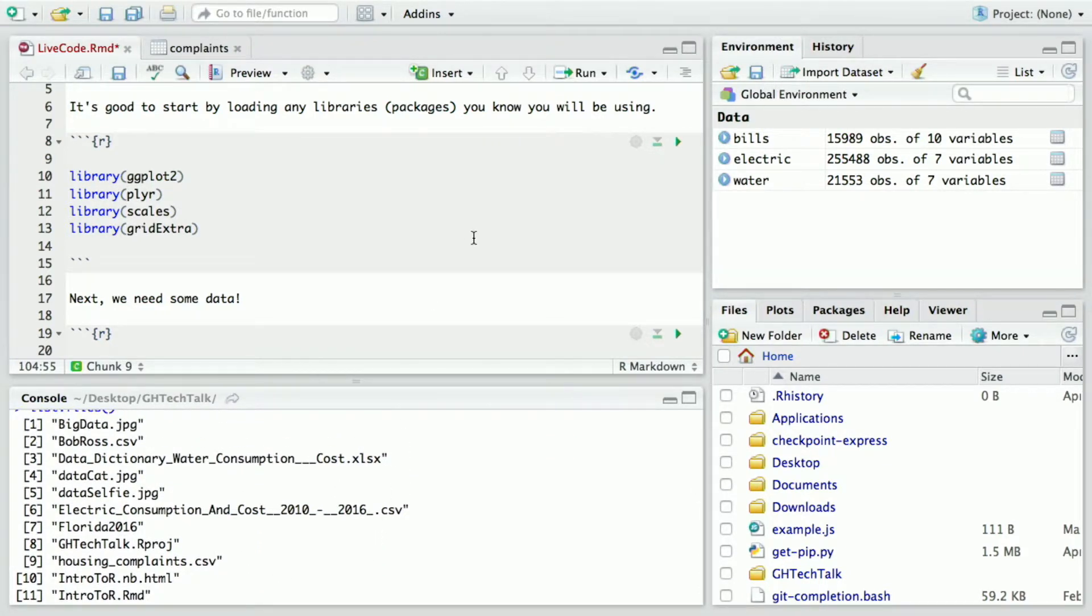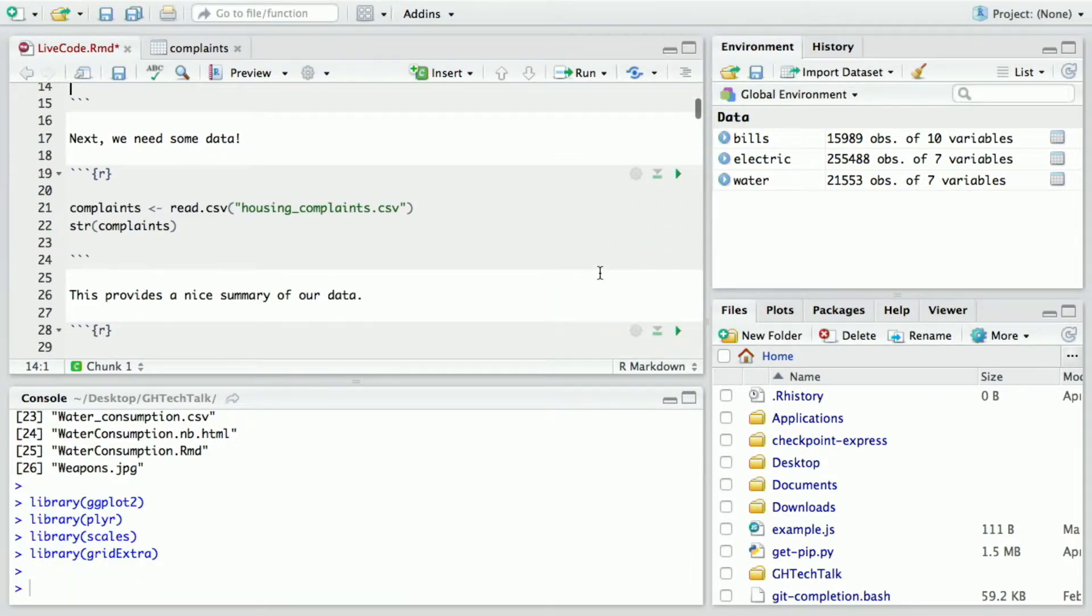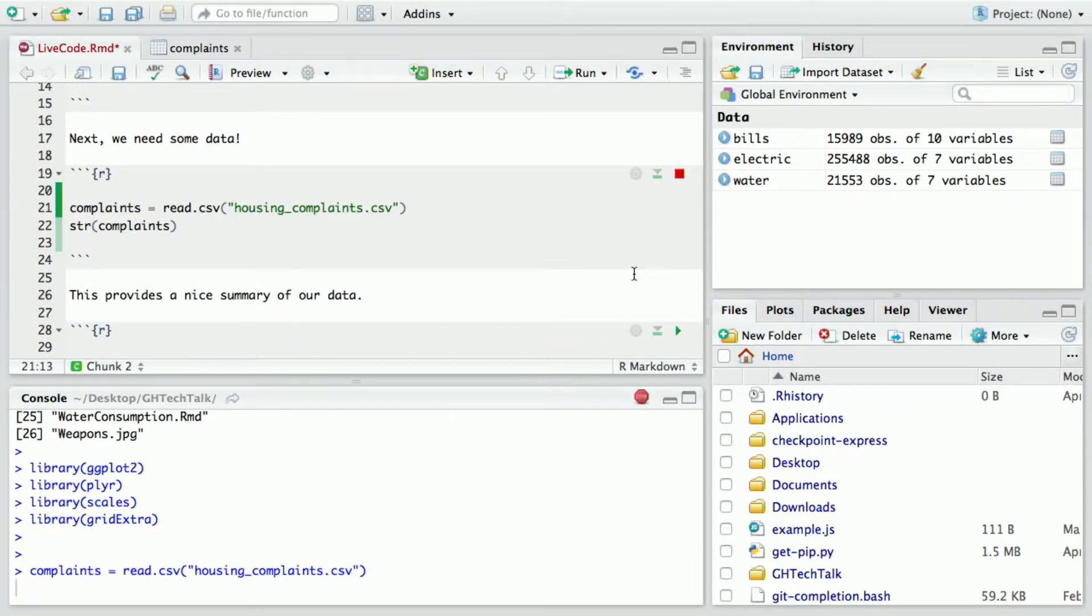So here we are. The first thing you need to do is just load the libraries you'll be using, and here I am loading a data set about housing complaints in New York City. I've just named this variable complaints and generally you use a left-facing arrow to assign a variable but we could do an equals and that should be fine too. I will start loading it because it's quite a large data set, almost a million housing complaints in New York City. This str command stands for structure and it's just going to give me a list of the different columns and the data types of those columns.